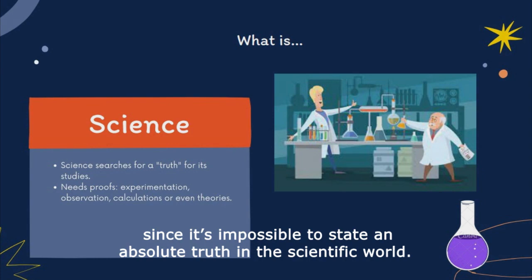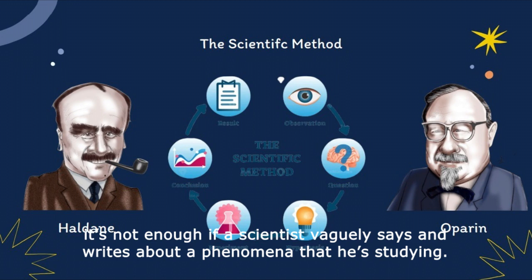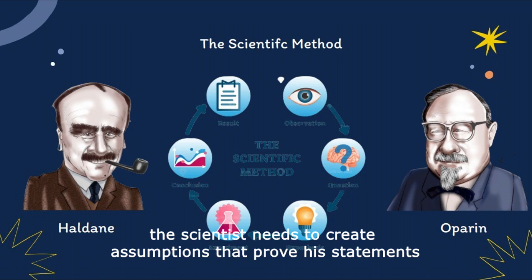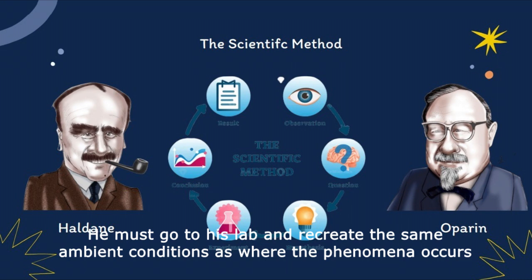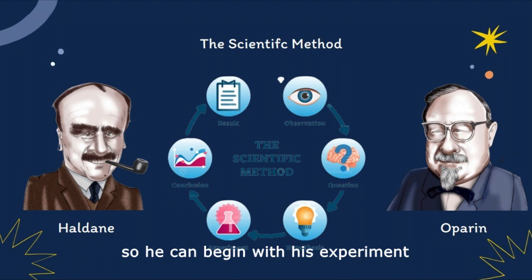However, it's not enough if a scientist vaguely says and writes about a phenomenon that he is studying. When experimentation is not possible, the scientist needs to create assumptions that prove his statement, whether based in observation, calculations, or theory. However, if possible, he must go to his lab and recreate the same ambient conditions as where the phenomenon occurs, and detailedly describe the conditions, so he can begin with his experiment — the scientific method.